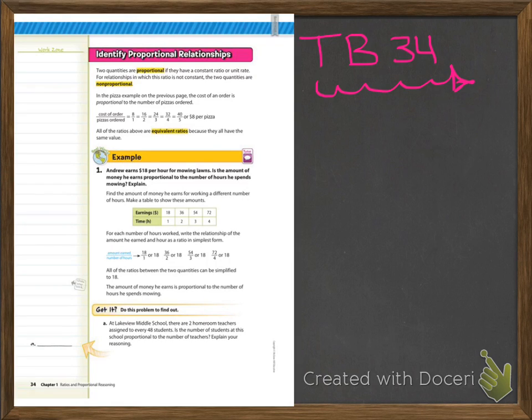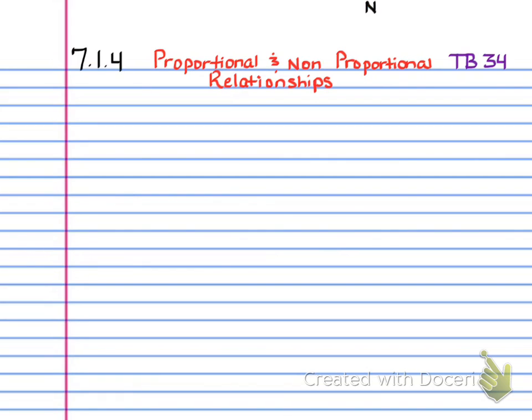So firstly, you'll see here we're on textbook page 34. So it says identify proportional relationships. You want to head your paper 7.1.4, Proportional and Non-Proportional Relationships. And then also you want to have your textbook page 34 and your name, date, and period.